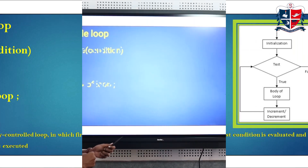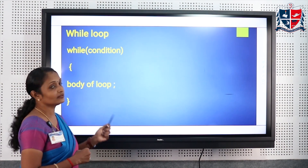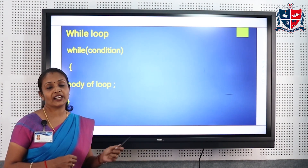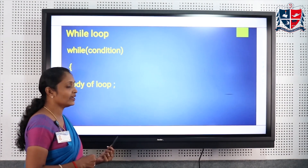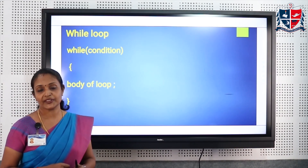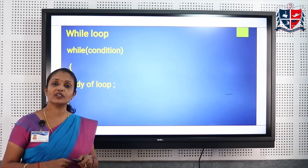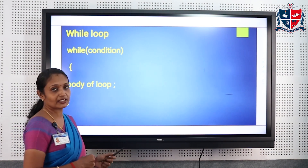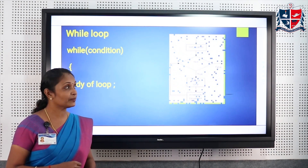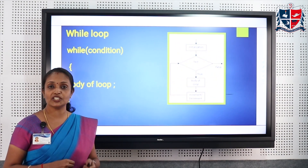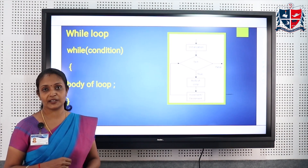The syntax for the while loop is: while (condition) { body of the loop }. First the condition is evaluated, and if the condition is true the body of the loop will be executed. If the condition is false the loop will be terminated and control is transferred to the next statement after the loop. For every looping statement we have three steps: initialization, condition, and increment or decrement.